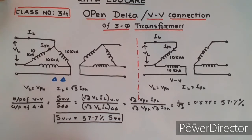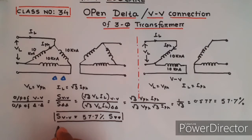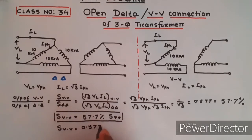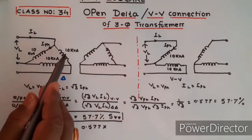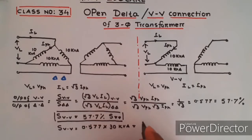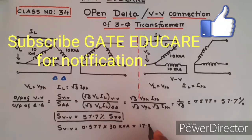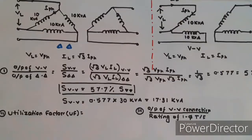Therefore, the output of the V-V connection equals 0.577 times the total output of the delta-delta connection. The total delta-delta output was 10 + 10 + 10 = 30 kVA, so the V-V output becomes 0.577 times 30 kVA, which equals 17.31 kVA.